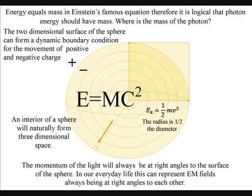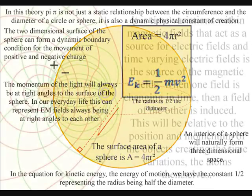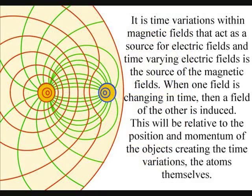This will be done using geometry that represents not just the mathematics, but also a geometrical process in three-dimensional space. If you imagine light radiating out in all directions forming a sphere, the momentum of the light will always be at right angles to the surface of the sphere. In our everyday life, this can represent electromagnetic fields always being at right angles to each other.